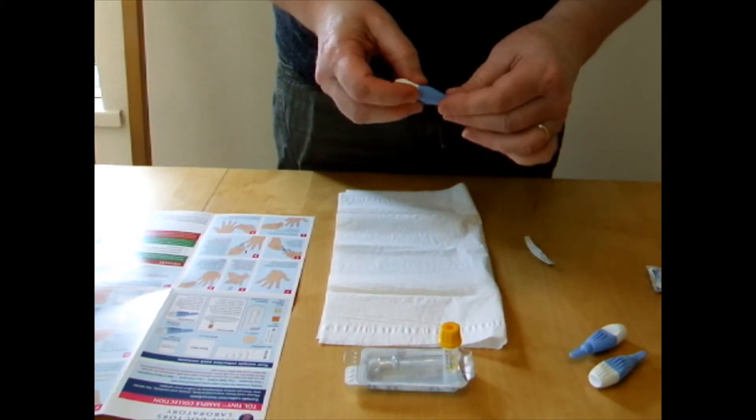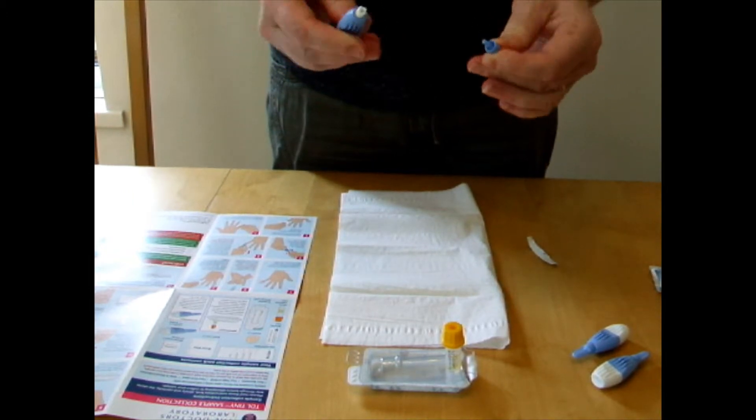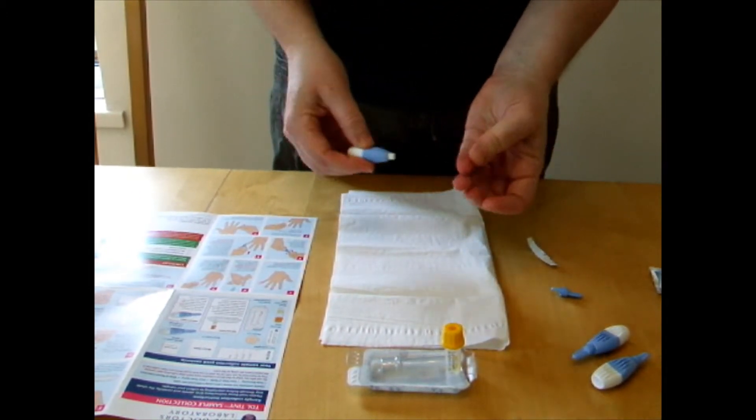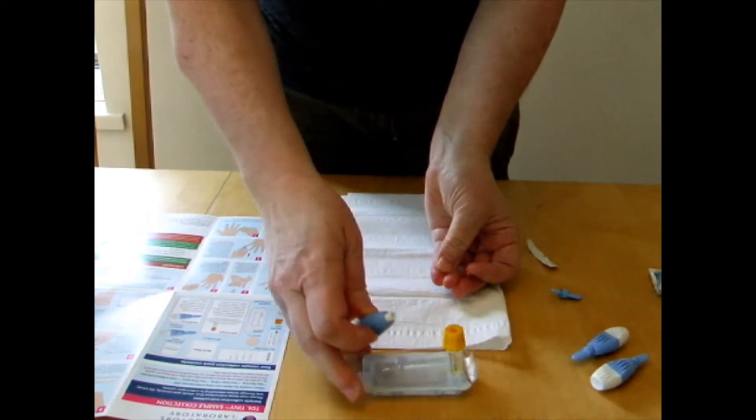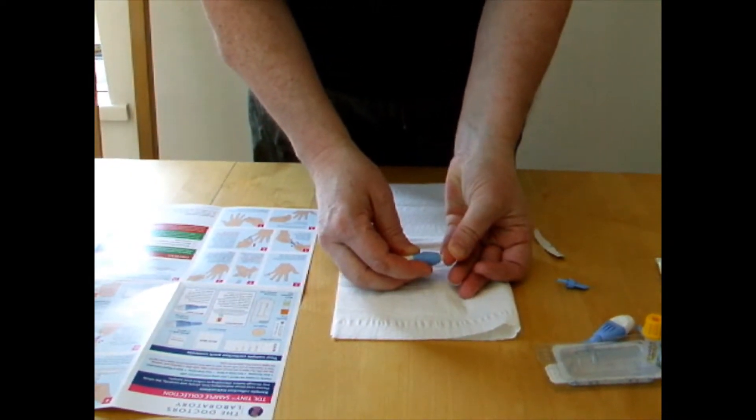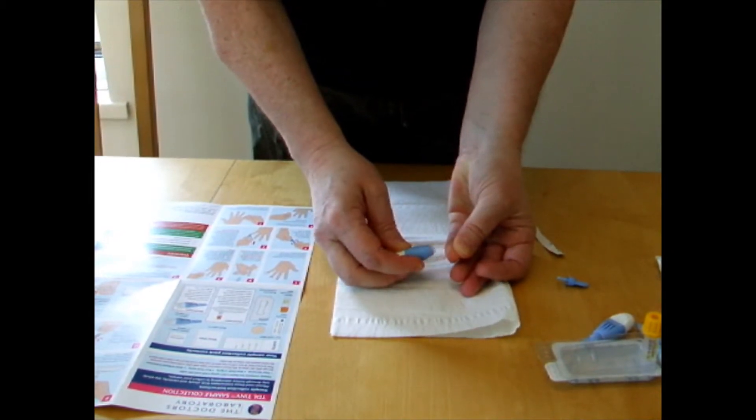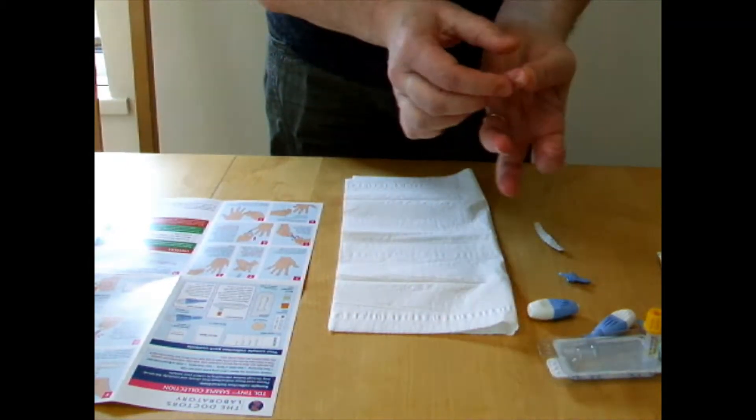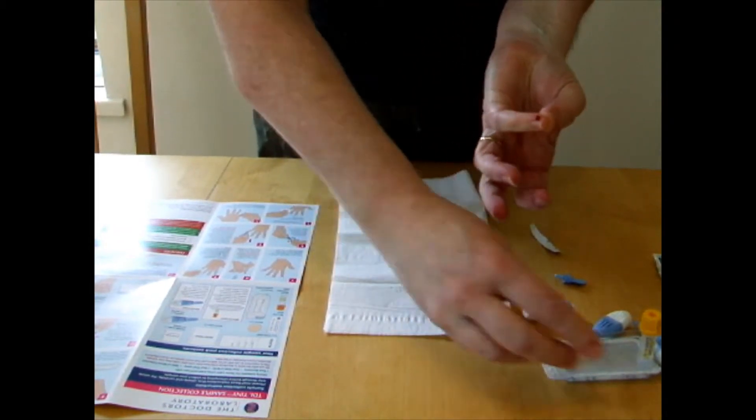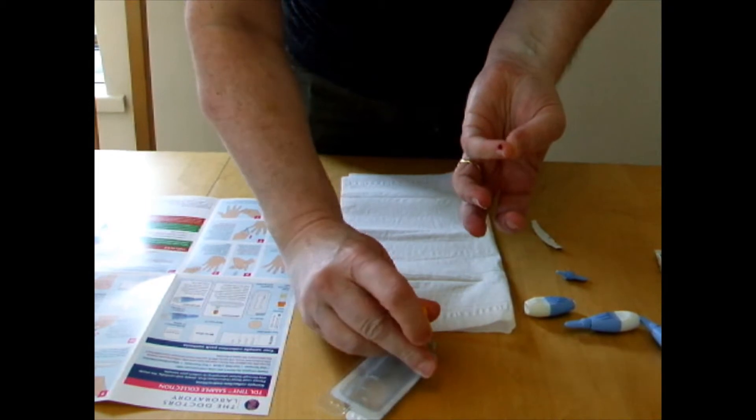Take the lancet and pull it out. You won't actually see the needle but there's a small needle in there and you're going to press on the side of your finger until it clicks and then you can see that you can get a nice flow of blood.